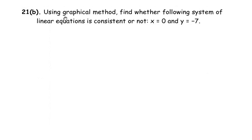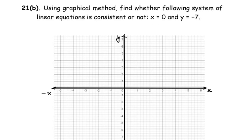Now let us move on to the OR question: Using graphical method, find whether the following system of linear equations is consistent or not. The given points are x=0 and y=-7. Let us again consider the graph for this question.